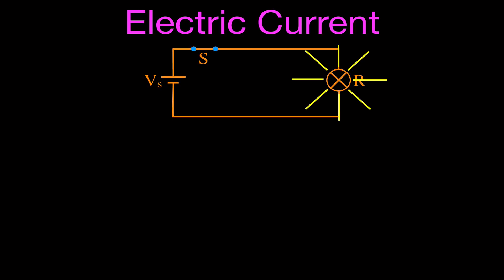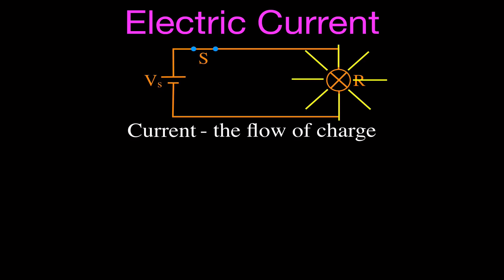What is electric current? Current is simply the flow of charge. It doesn't say it's the flow of negative charge, and it doesn't say it's the flow of positive charge. It doesn't matter if we have the positive charges flowing one way and the negative charges flowing the other — you get the same result as long as it's the same amount of charge. All we really say is it's the flow of charge.